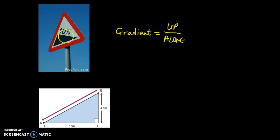For instance, in this 10% case, that means if you went along 100 meters then you go up 10%. So 10% of 100 is 10. Your slope would look something like that.